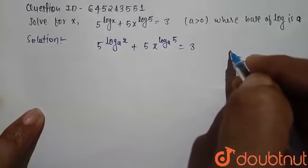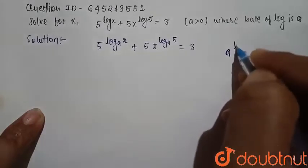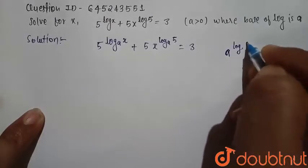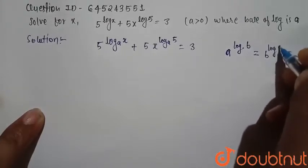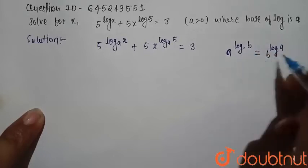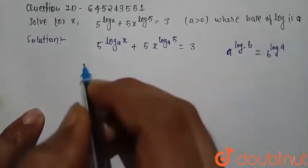Before solving this we should know that a raised to power log b is equal to, we can write this in the form where a and b are interchanged. Means a and b are interchanged.